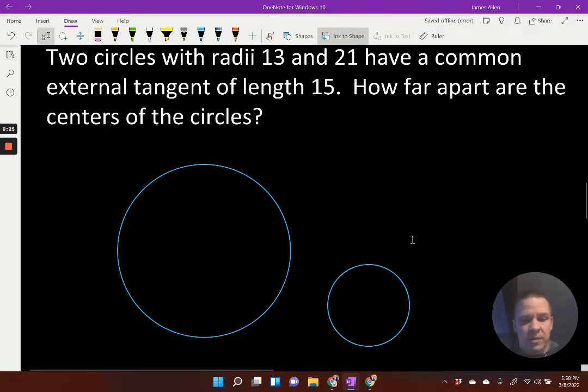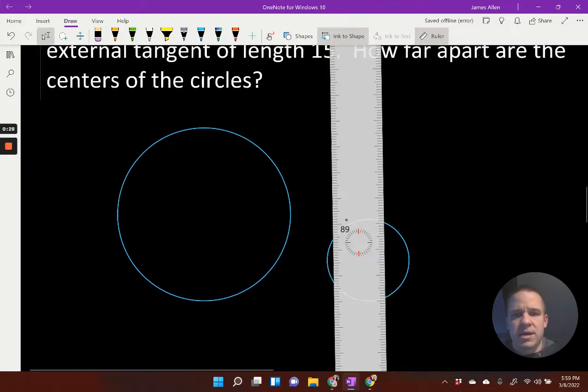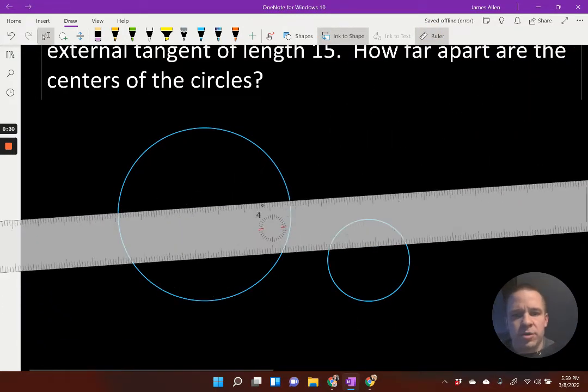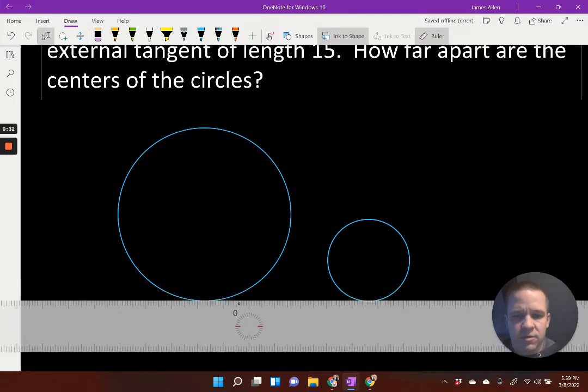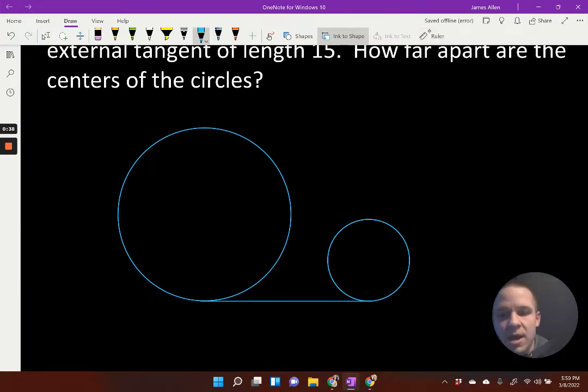I'm going to readjust these a little bit. Now I'm going to draw in my external tangent. I want this to be pretty much horizontal here, as horizontal as it can be. All right, I did readjust it. I guess I can't really take full credit for that. So there's my point of tangency. There's my point of tangency.